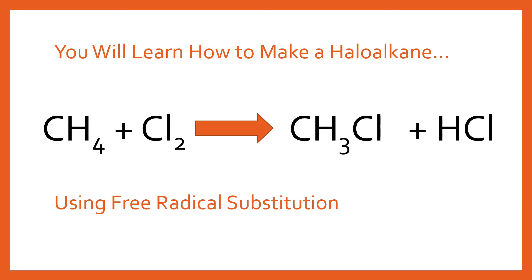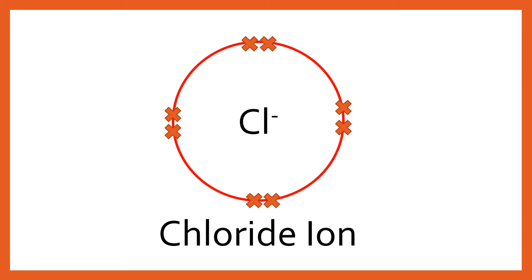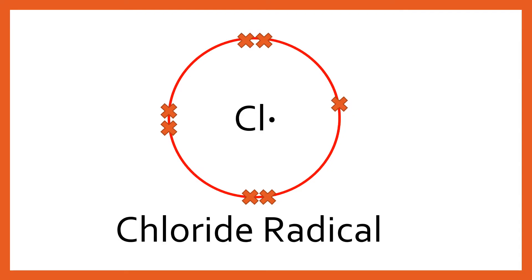Before you can understand this reaction you have to understand some keywords. The first is the concept of an ion. A chloride ion has chlorine in group 7 with an extra electron in its outer shell, making it stable. However, if it were to lose one electron, it becomes a chloride radical. We show the radical by putting a dot outside of it, representing an unbonded electron. This chlorine is extraordinarily reactive and will try to form another bond to get back to that stable structure.